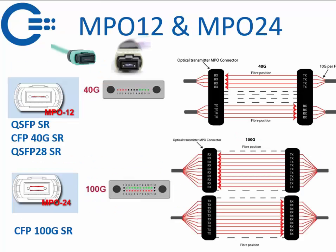There are two versions of MPO: MPO 12 and MPO 24. There are actually even more variants than that, but those are not really used in the industry. You can see pictures here — one with 12 fibers inside, and here you can clearly see two rows of 12, so 24 fibers total.